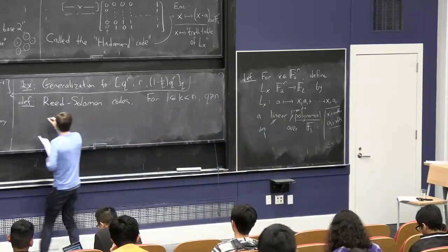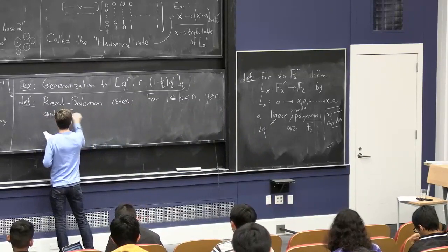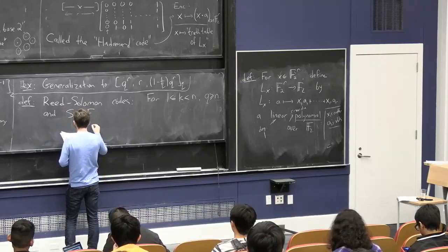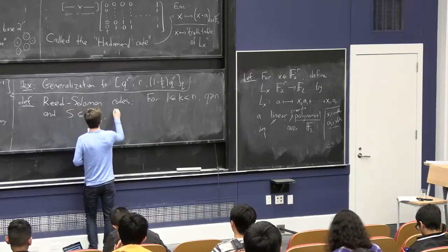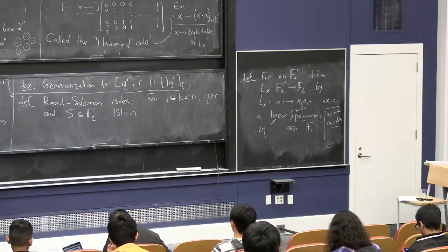And finally, they're also defined by a subset S of the field of size n. In order for this to be possible, this is why q needs to be at least n.